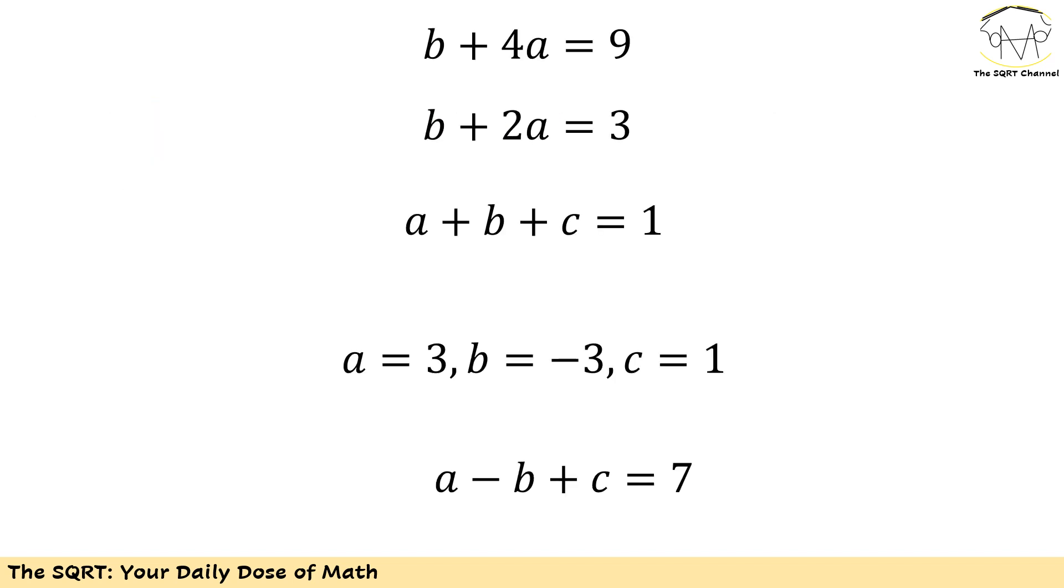From the first two equations you will see that 2a will be 6, or a is going to be 3. Then we will find b equals negative 3, and finally c is going to be 1 from the last equation.